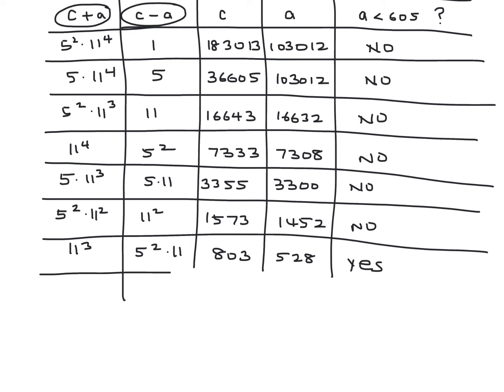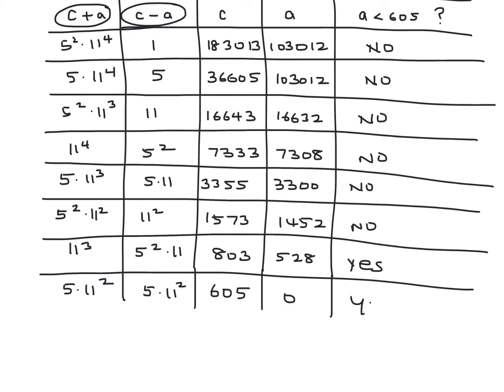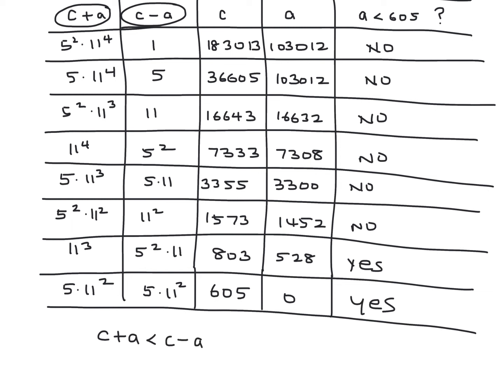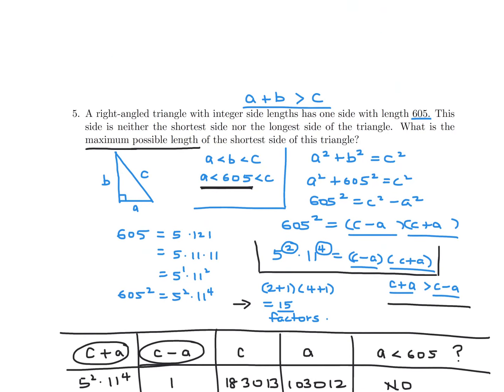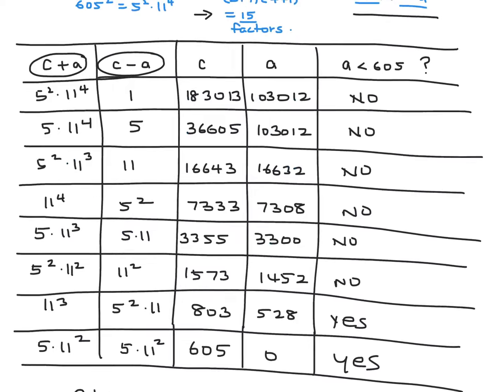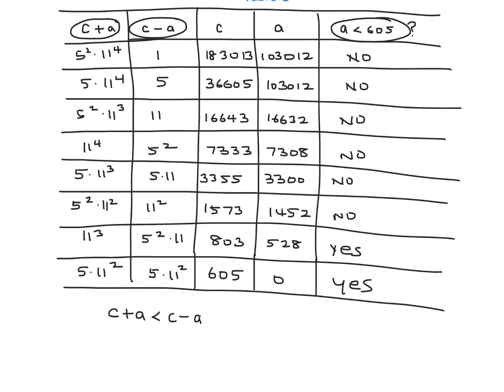The next pair, 5 times 11 squared and 5 times 11 squared, gives C equals 605 and A equals 0 — that also satisfies the condition. After that, all remaining pairs have C plus A less than C minus A, so they're not valid. The values of A keep going down, and the maximum possible value of A satisfying the condition is 528. So the maximum shortest side is 528.